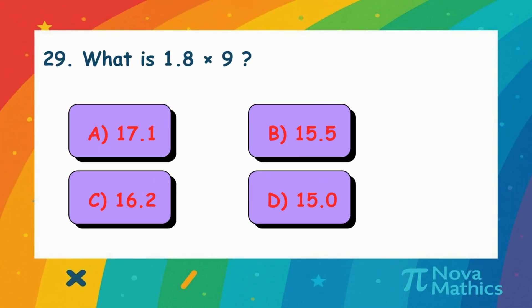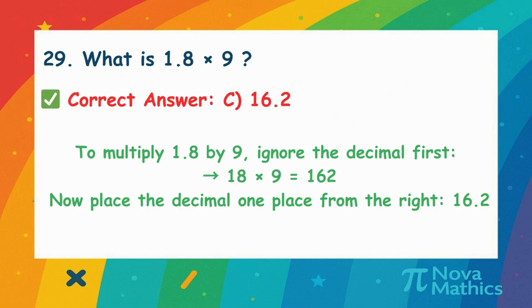28. What is 1.8 times 9? Let's multiply 1.8 by 9. First, think of it without the decimal. 18 times 9 is 162. Now put the decimal back one place. That's 16.2.